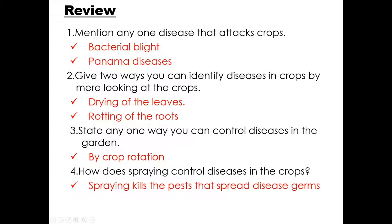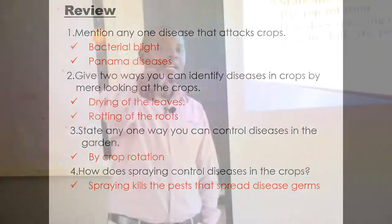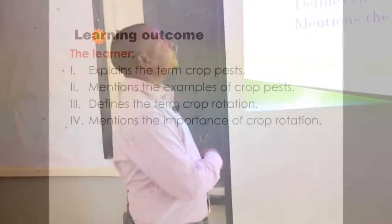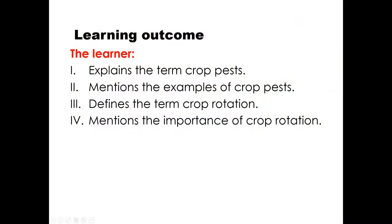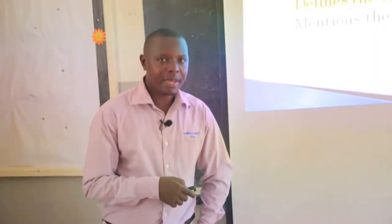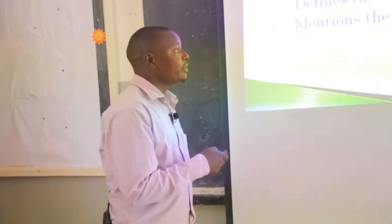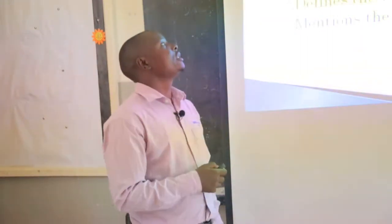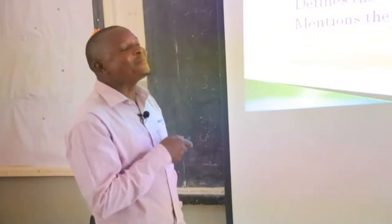Now let's look at crop pests. What do I expect from you as learning outcomes? One, you'll explain the term crop pests. Two, you'll give examples of crop pests. Three, you'll define the term crop rotation and talk about the importance of crop rotation, because it is one of the ways of controlling crop pests.